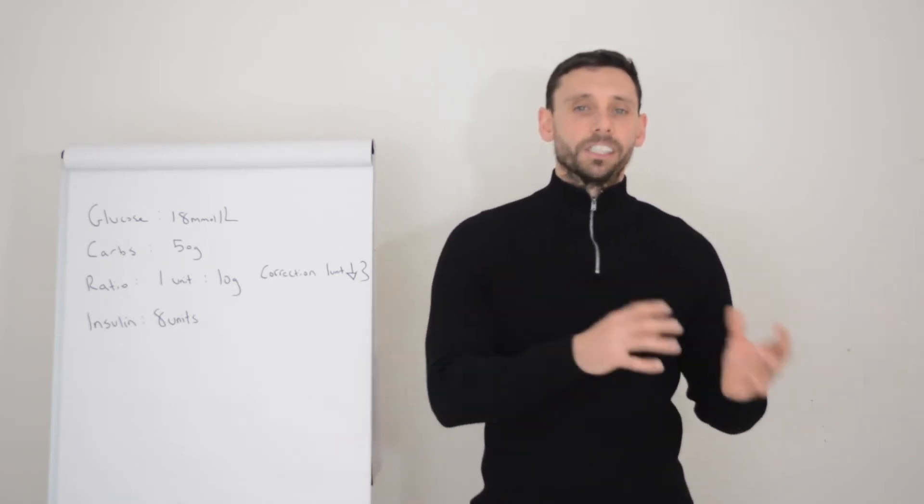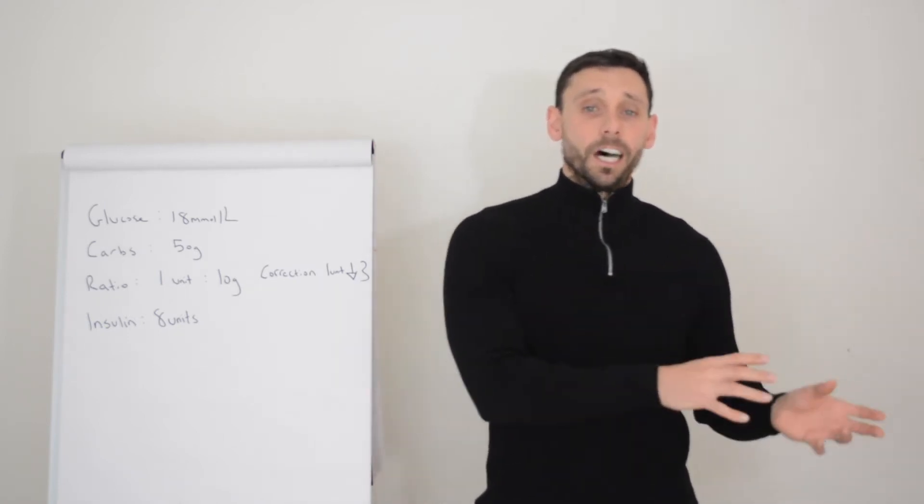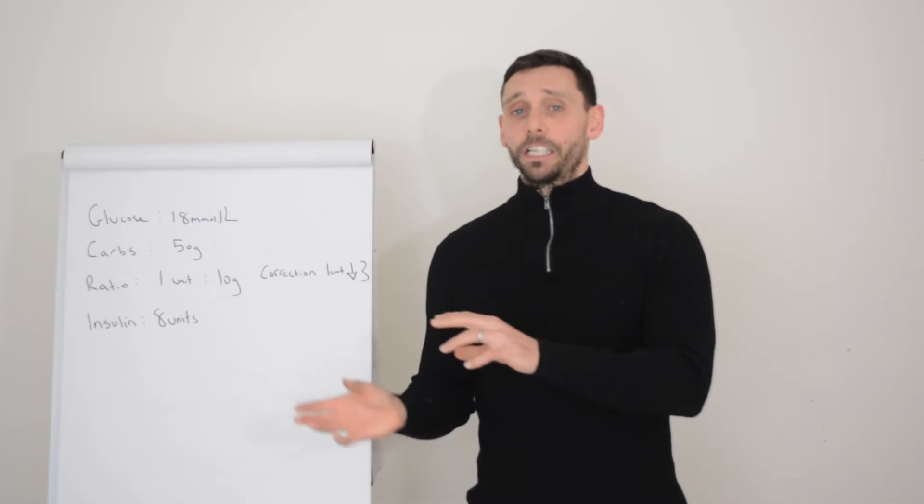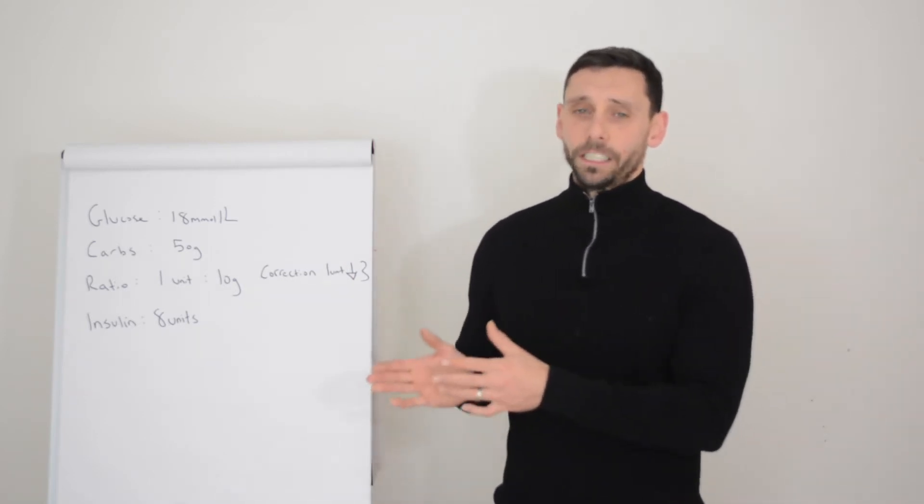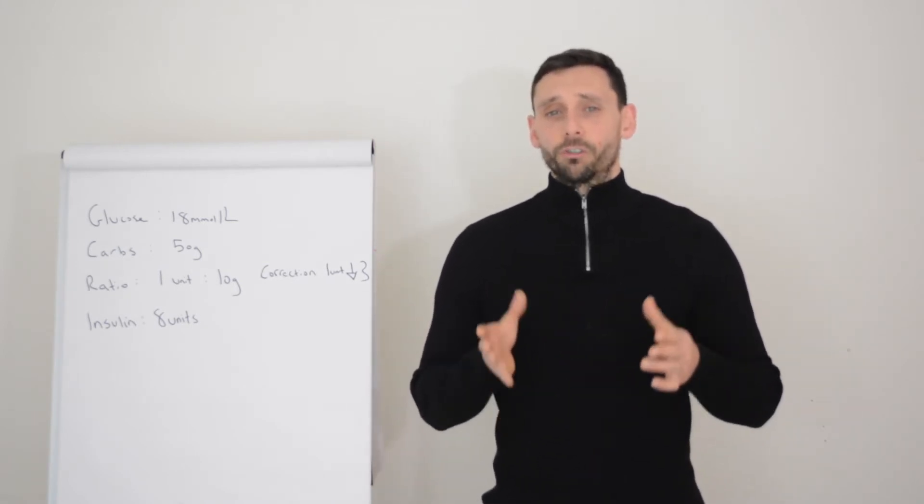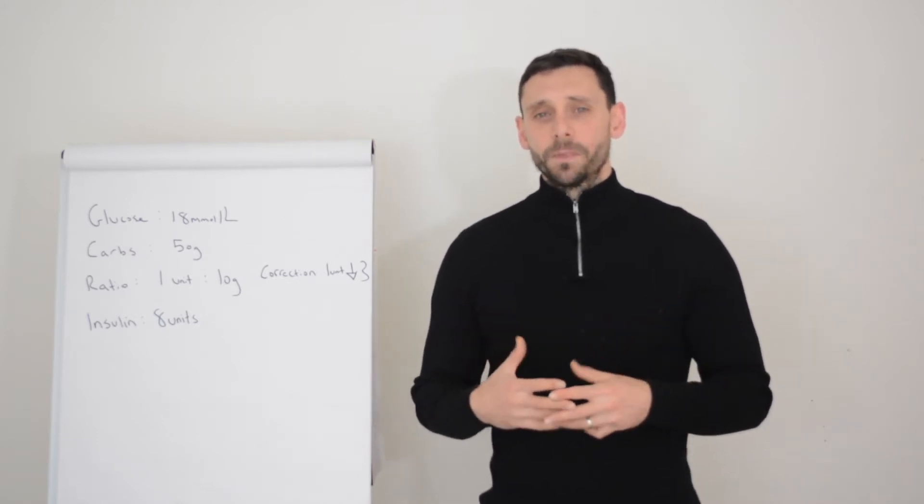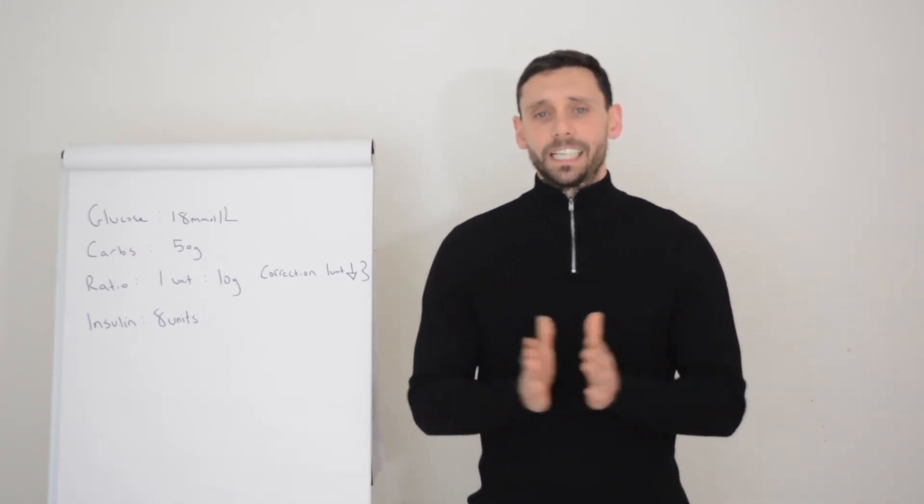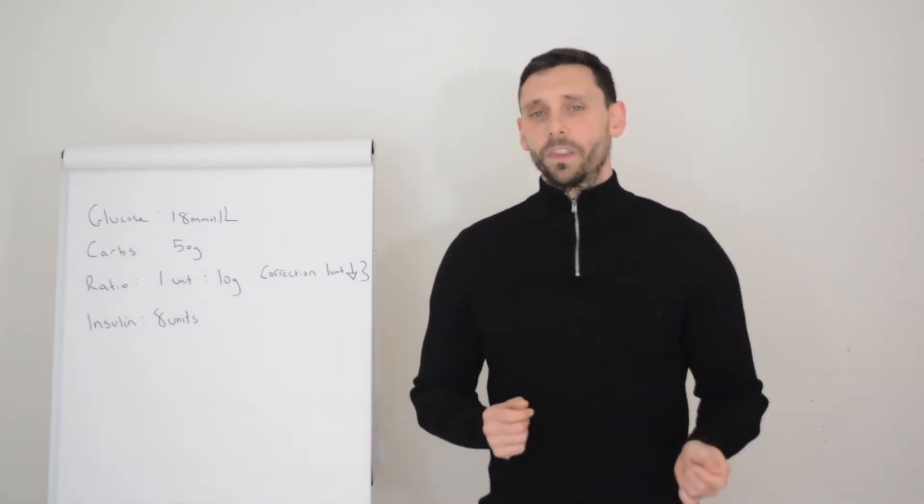You've borrowed some correction insulin to cover the carbs or vice versa - you've borrowed some carb insulin to actually add a correction because you've miscalculated the carbohydrates. So although the endpoints are the same and you've ended up where you wanted to be, you don't actually know whether your true ratios for your carbs and correction are correct because you've given them together. What we need to do is actually separate them out at different time points to check this, so you're only testing one thing at a time.